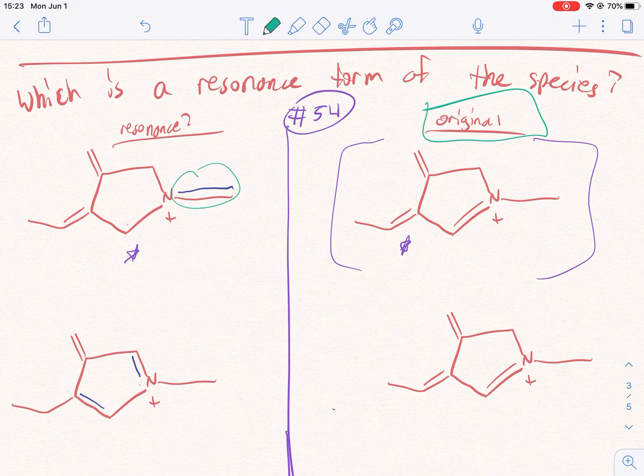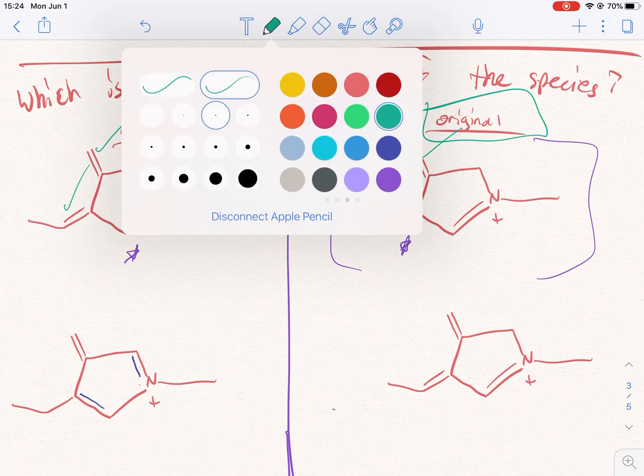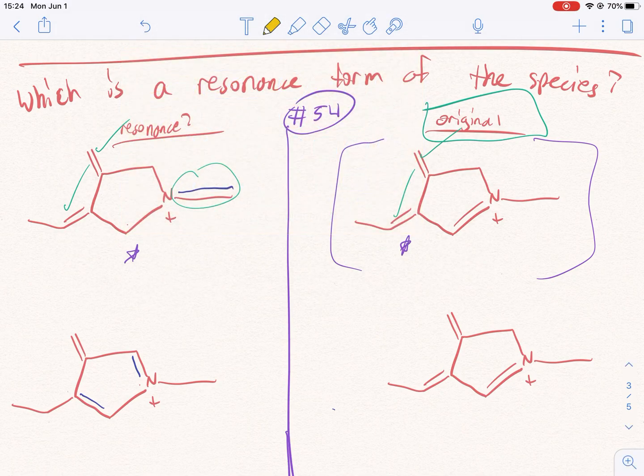All right, so this one has a double bond over here. And so, OK, this stayed the same. This stayed the same. And what changed?